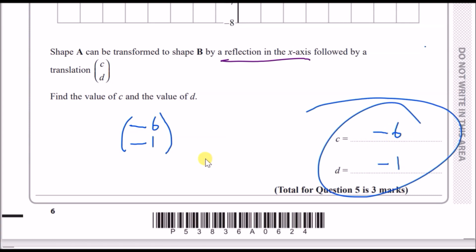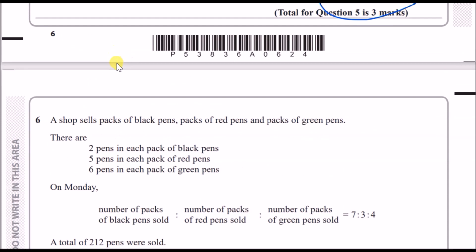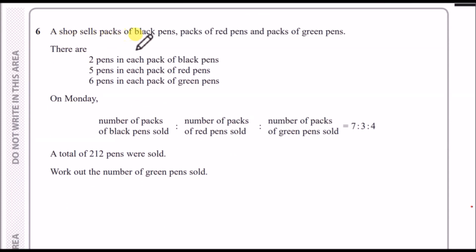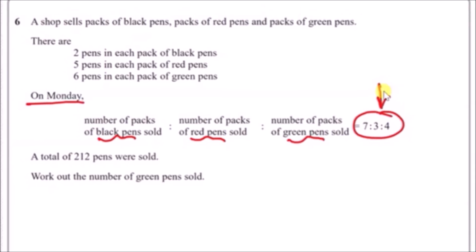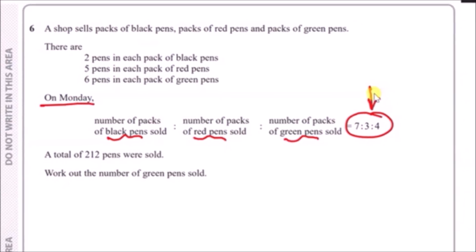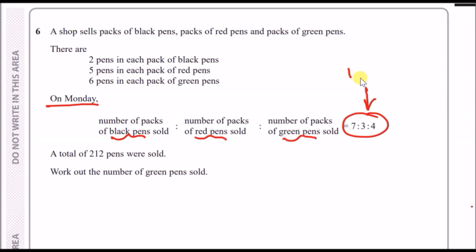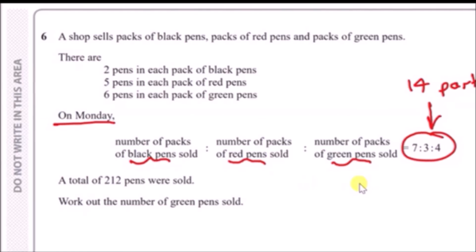Number six: a shop sells packs of black pens, packs of red pens, and packs of green pens. There are 2 pens in each pack of black pens, 5 pens in each pack of red, and 6 pens in each pack of green. On Monday the number of black pens sold versus red versus green were given by that ratio: 7 represents the number of packs that were black, 3 represents packs that were red sold, and 4 represents packs that were green sold.